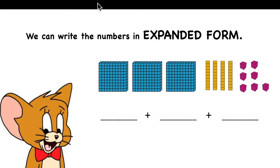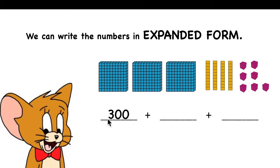Like here. How many hundreds can you count? We can count 3 blocks of hundreds, so it is 300. How do we write 300? Like this — this is 300. Now we will go to tens. How many tens do you have? 1, 2, 3, 4. Four tens — we write it like this. Four tens equals 40.